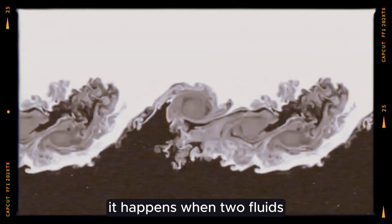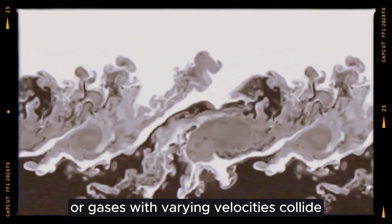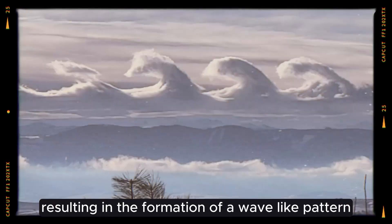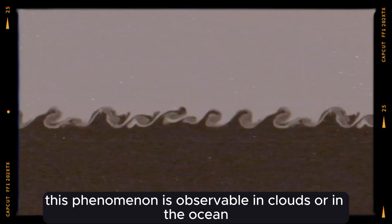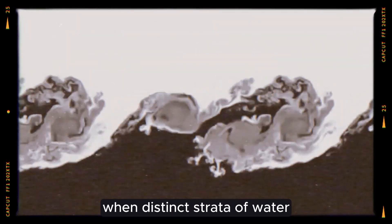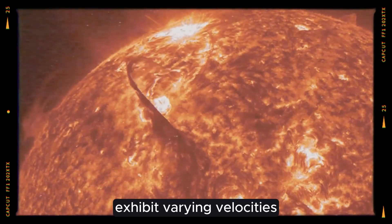It happens when two fluids or gases with varying velocities collide, resulting in the formation of a wave-like pattern. On Earth, this phenomenon is observable in clouds or in the ocean